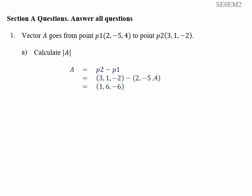Now to calculate the length, we want 1 squared plus 6 squared plus minus 6 squared. 1 squared is 1, 6 squared is 36. Minus 6 squared is also 36. 36 plus 36 is 72, plus 1 is 73. So the length of A is the square root of 73.